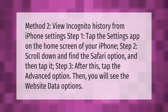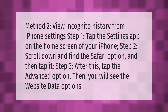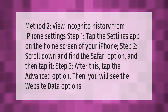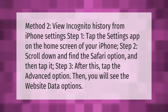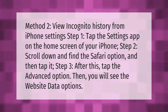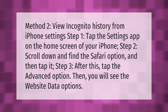Method 2: View incognito history from iPhone settings. Step 1: Tap the Settings app on the home screen of your iPhone. Step 2: Scroll down and find the Safari option, then tap it. Step 3: Tap the Advanced option, then you will see the Website Data options.